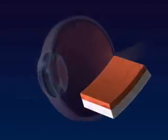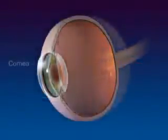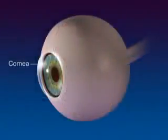The choroid is the middle layer that contains the blood vessels. The cornea is a clear circular area in the sclera where light enters the eye.